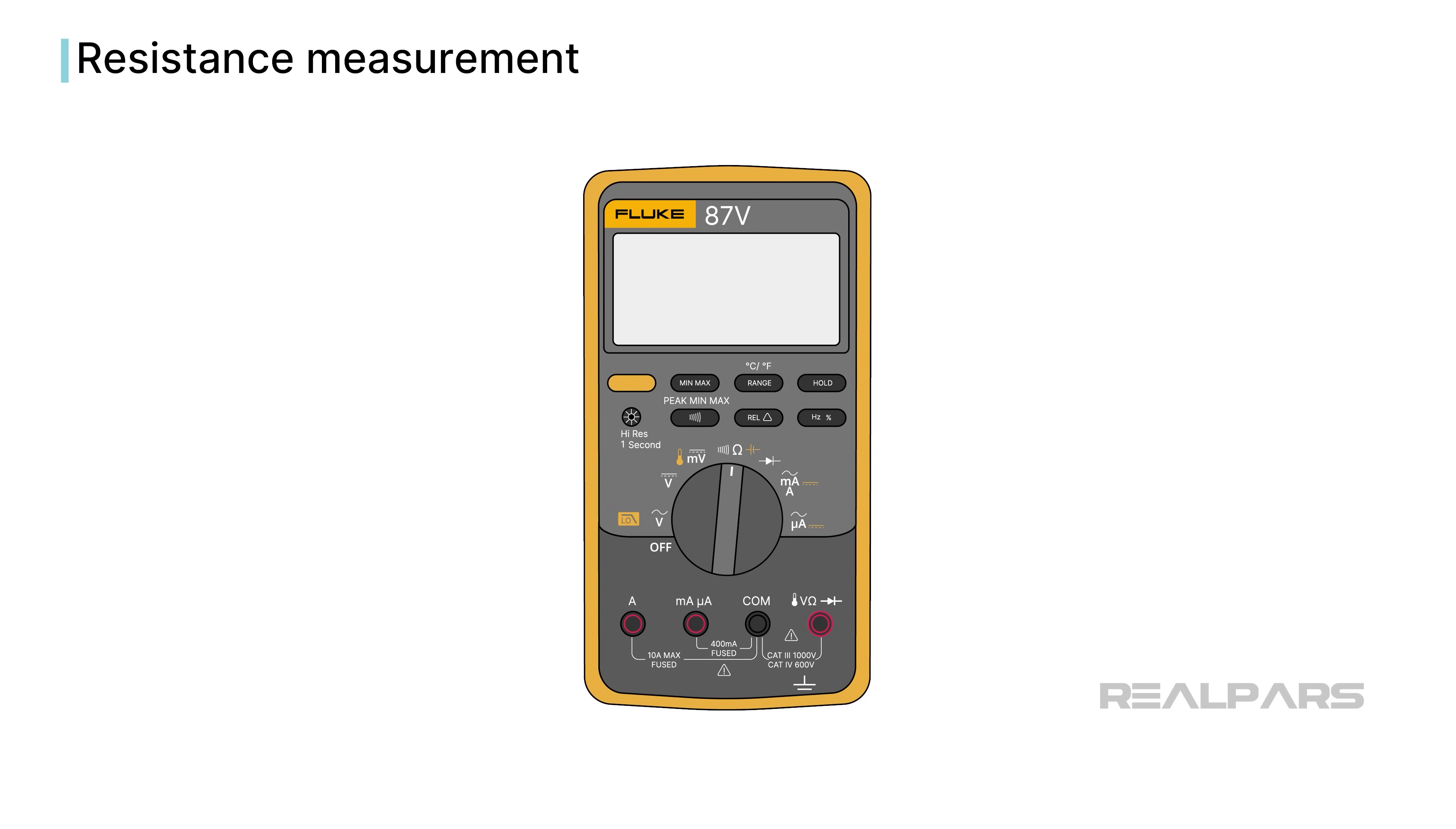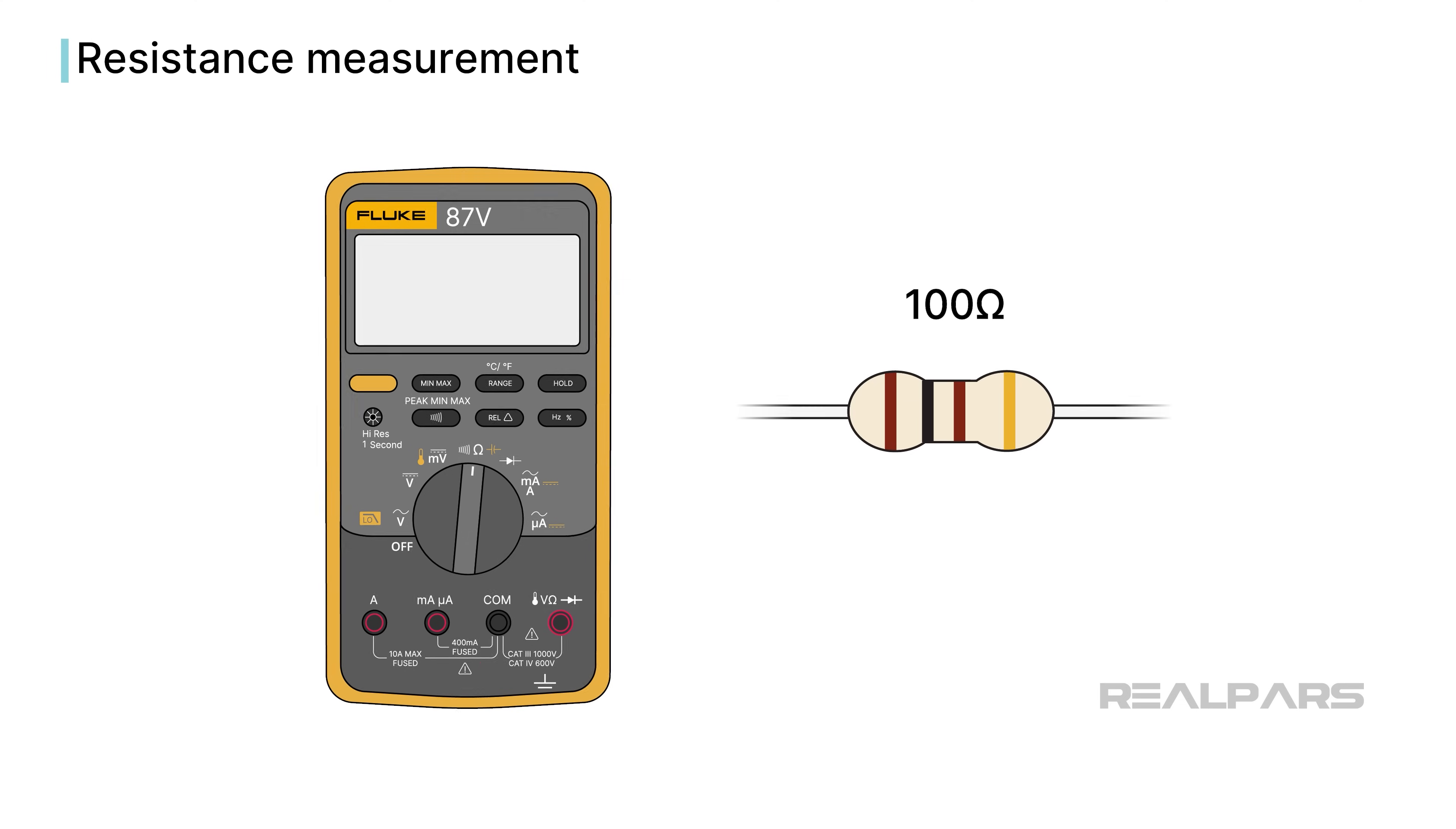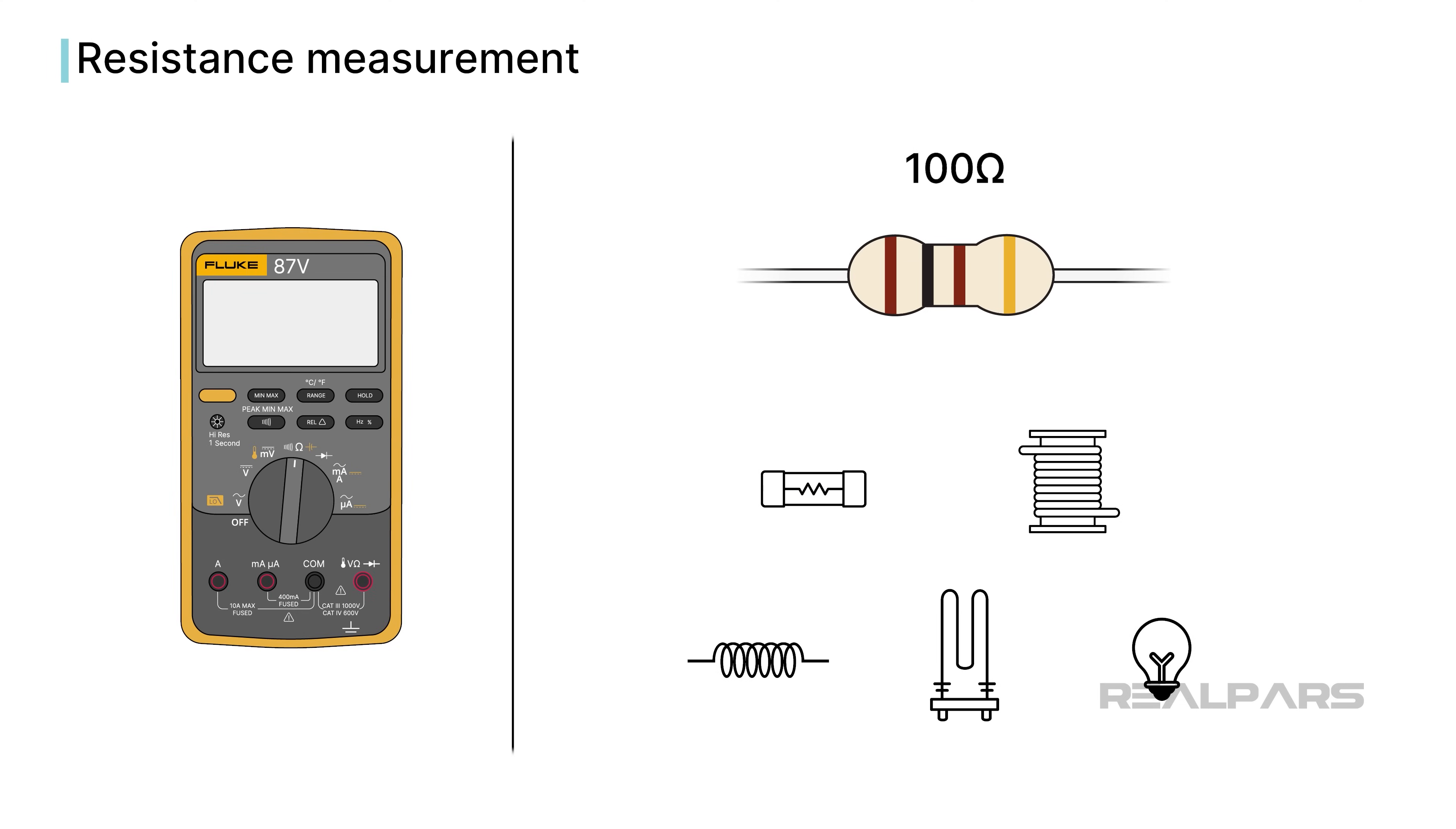Finally, we'll wrap up this video with the resistance measuring function of the DMM. The ohmmeter is useful for measuring the resistance of passive devices such as fuses, relay coils, solenoids, heater elements, and lamps.